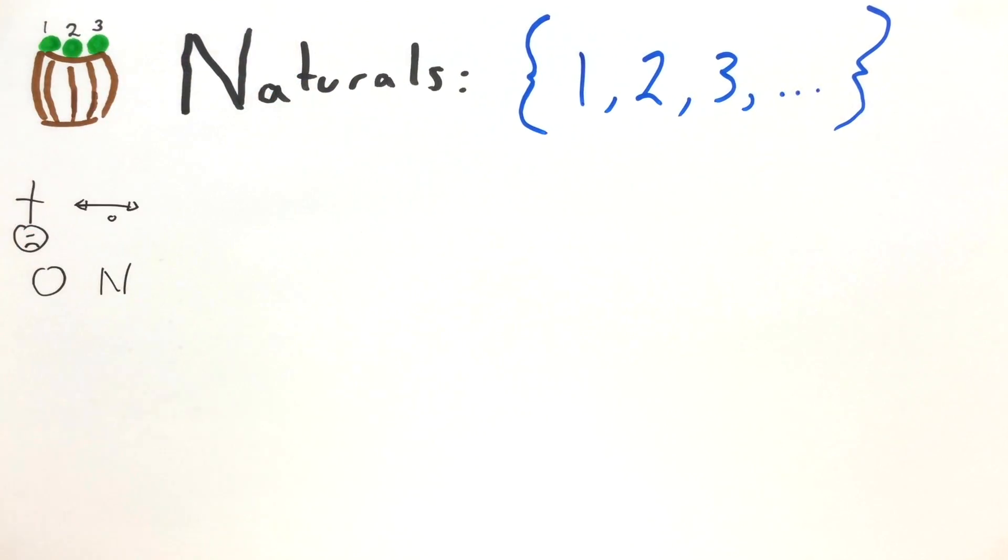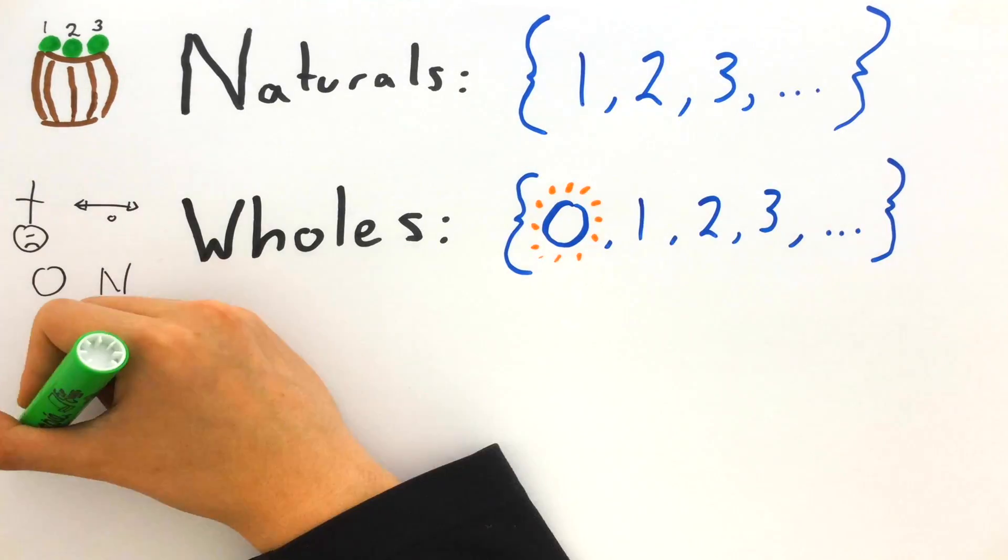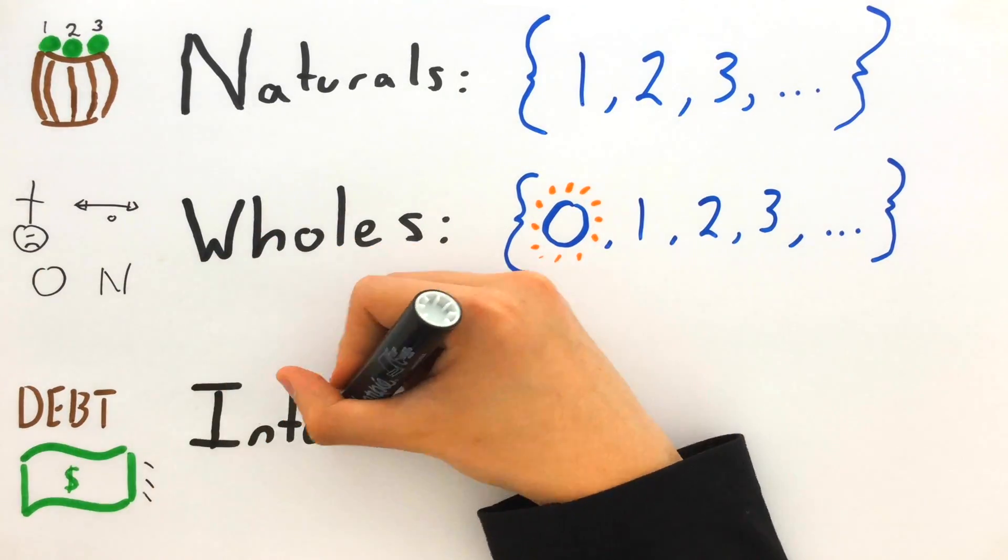We can make an entirely new set, the whole numbers, by adding on 0. And adding on the negative numbers gets us the integers.